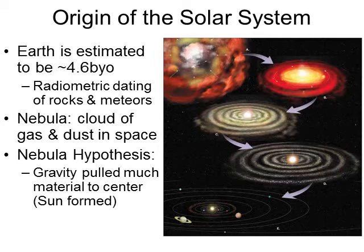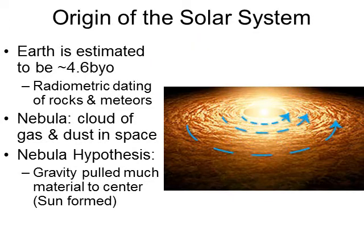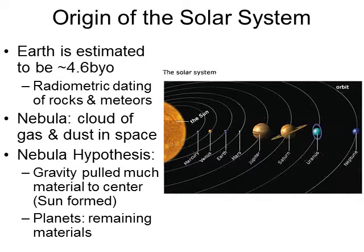As gravity pulls gas and dust toward the middle, a lot of solid chunks form closest to the star, while lighter gas particles remain on the outer edge. This explains our solar system. Looking at a picture of our solar system, the inner planets — Mercury, Venus, Earth, and Mars — are very rocky, terrestrial worlds.